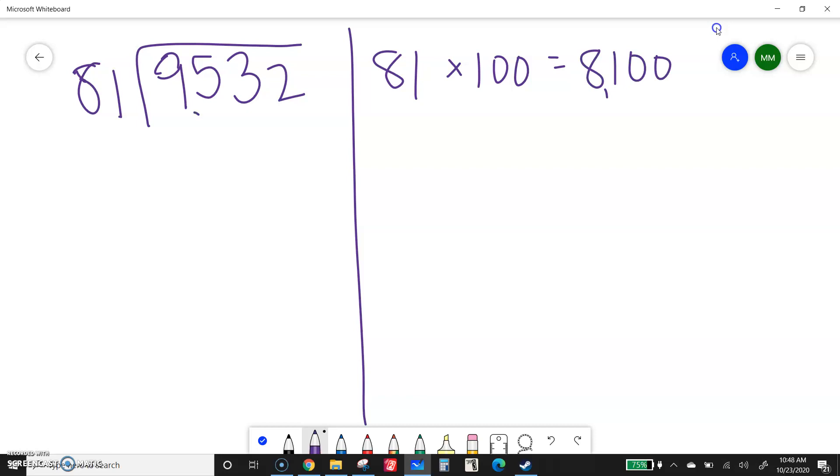8,100 which is less than my number here. Now sometimes that will not work. Say if I had something like 1,492 divided by 36. If I do 36 times 100 that's going to be 3,600, which is bigger than my number inside. So I can't always do 100 as my first group. But it's worth trying. So I have 8,100.